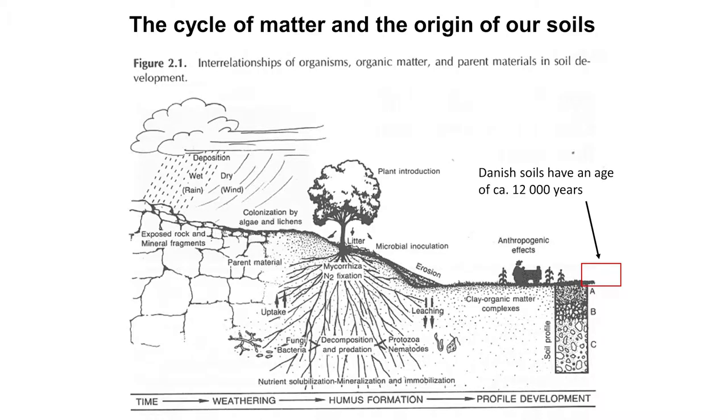This process continued and we got large forests. Within twelve thousand years, about ten to twenty metres of topsoil formed. The story continued: the forests were cut down and agricultural land was established, which is now used to grow our food and crops.